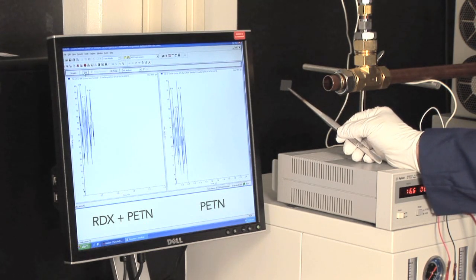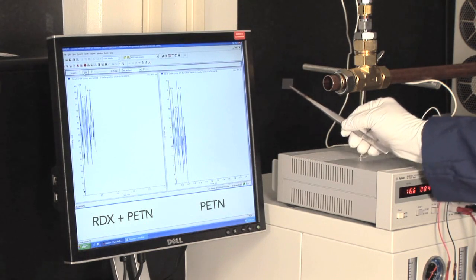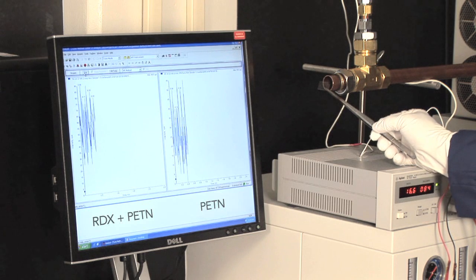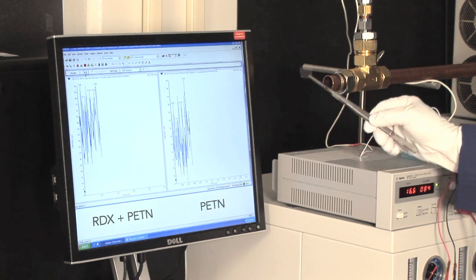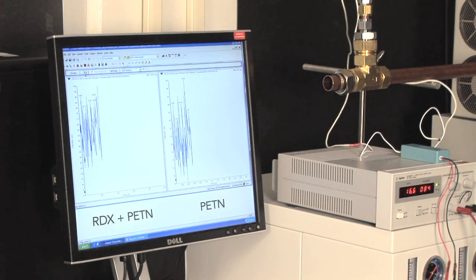This is a glass microscope slide with no sample on it. Here we sample the vapor coming off the slide, and as a blank, you see no response for either the RDX and PETN on the left-hand side or PETN on the right-hand side of the screen.